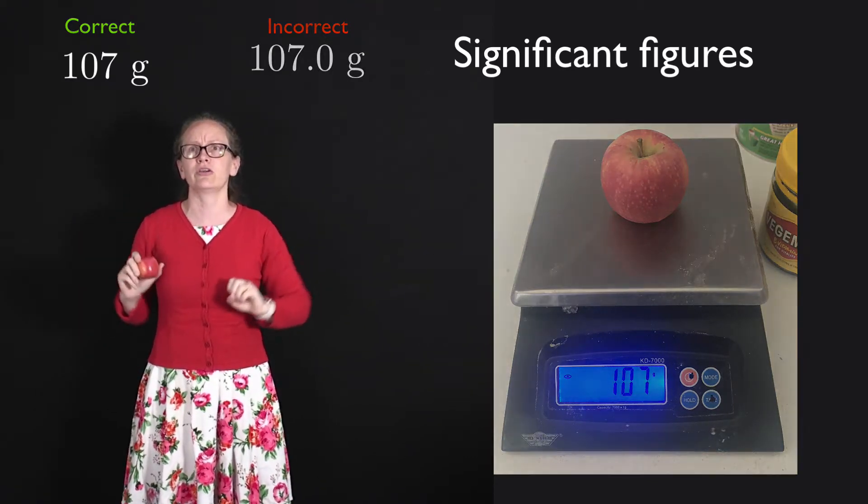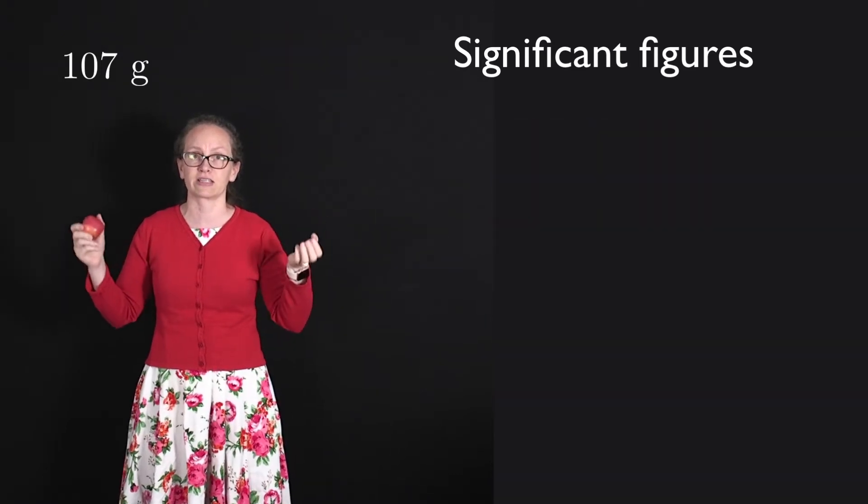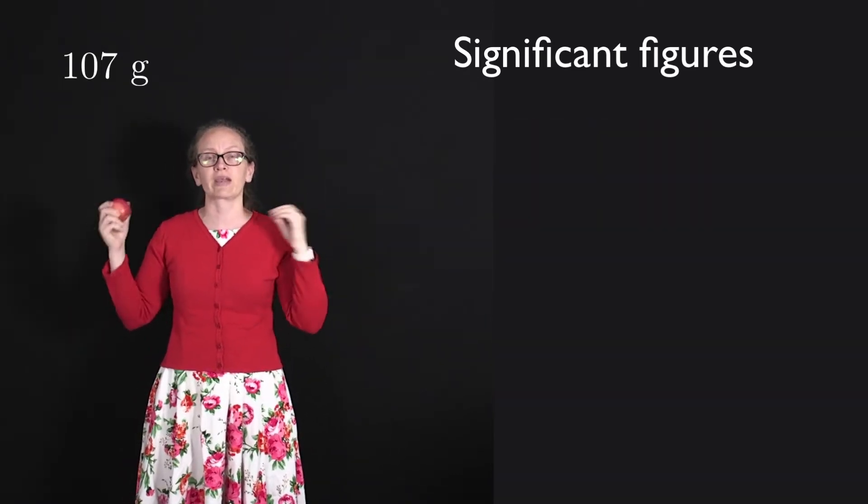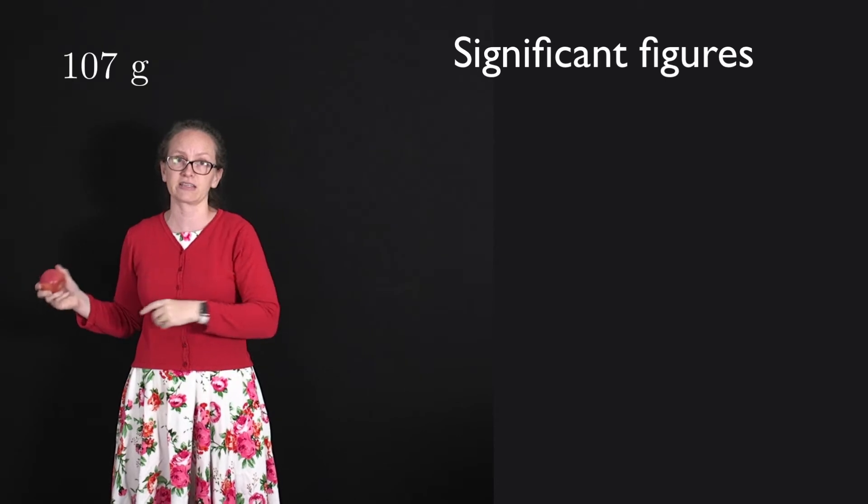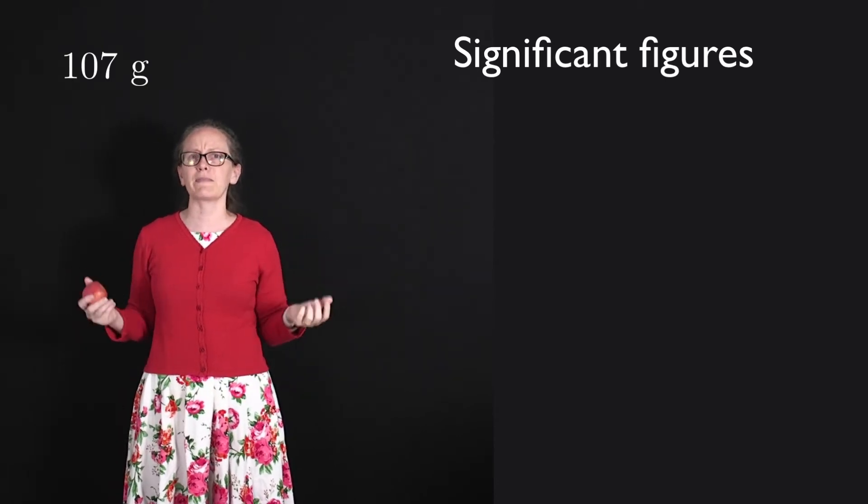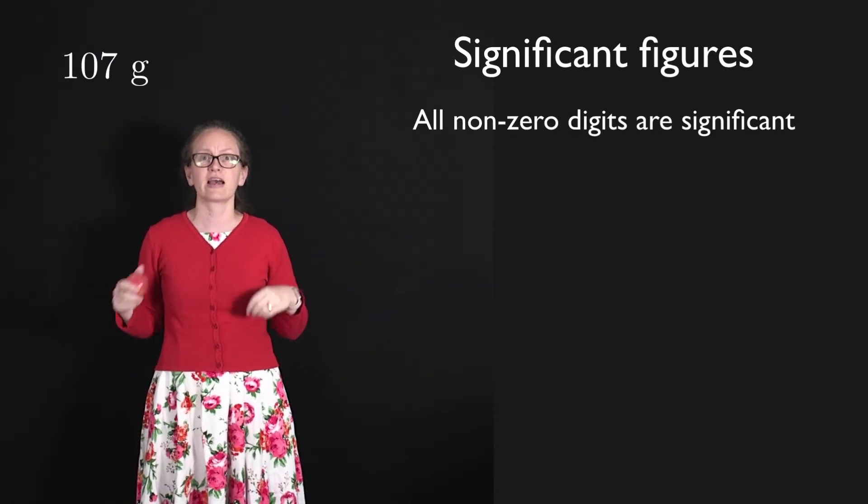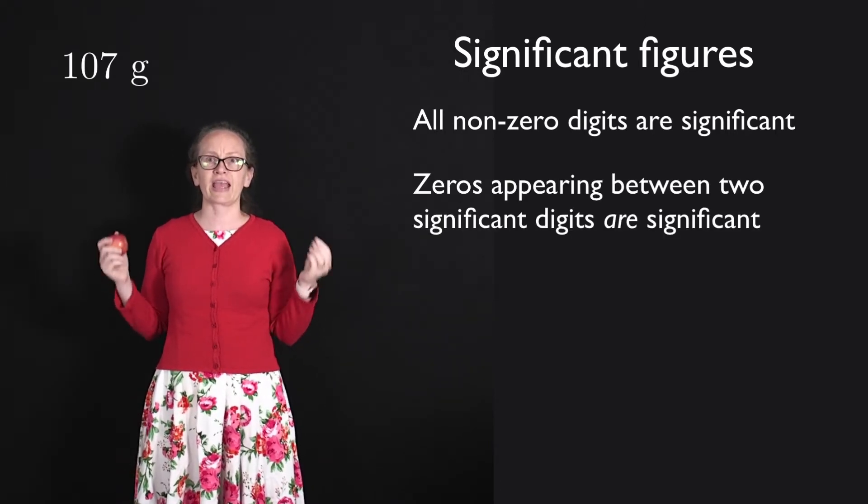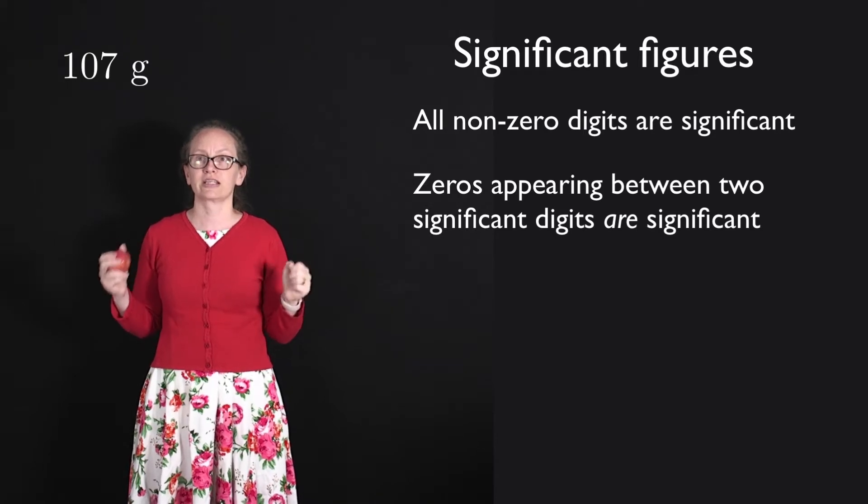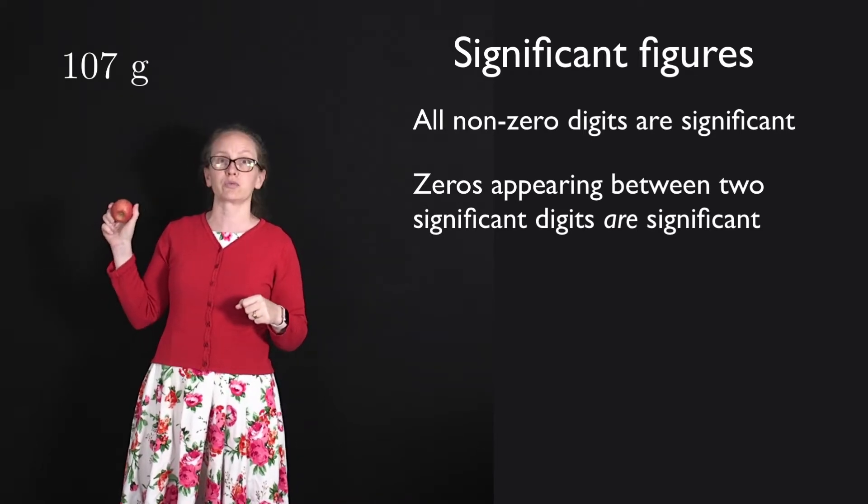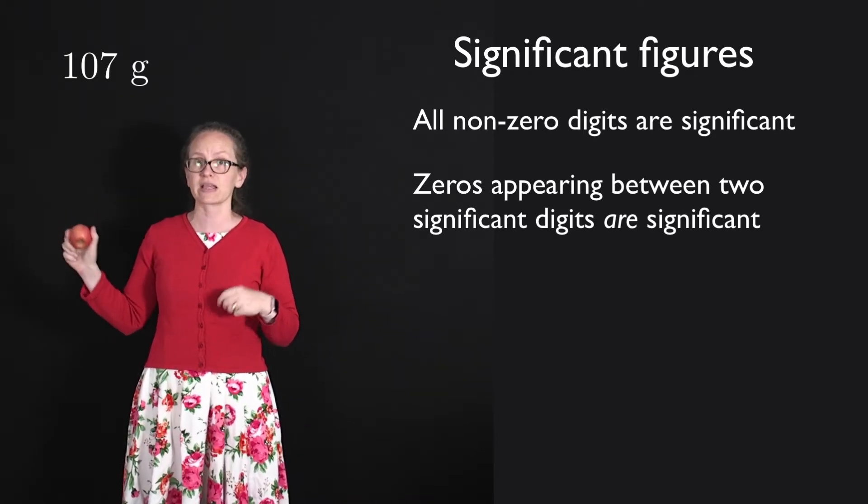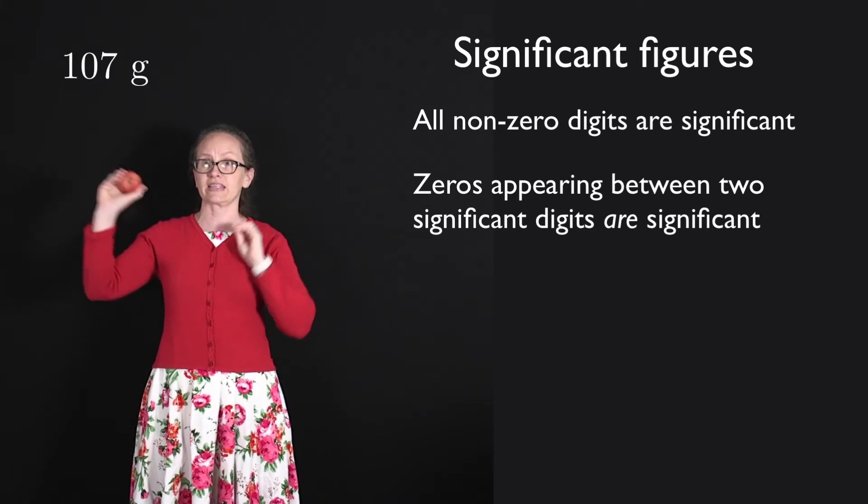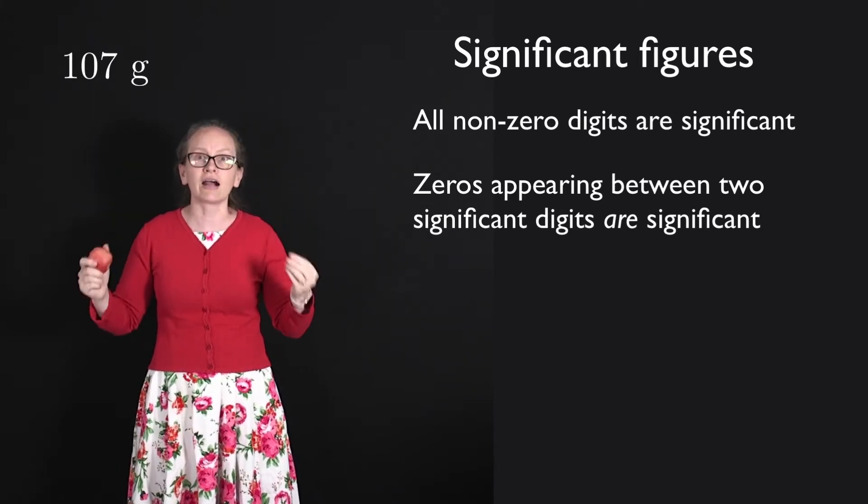So I assume that you have learned about significant figures before and you're comfortable counting the number of significant figures. A quick recap of the rules around significant figures are that all non-zero digits are significant. Zeros appearing anywhere between two significant figures, so for our apple which was 107 grams, the zero between the 1 and the 7, those are significant.